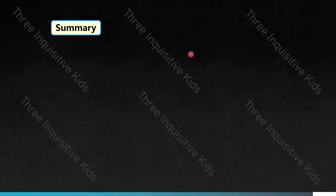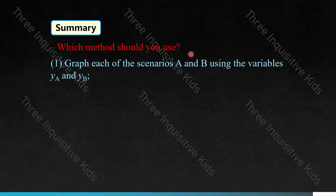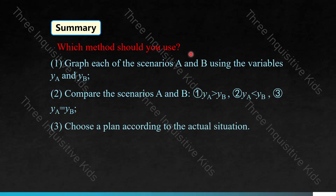Let's move on to the summary. The method is: graph each scenario A and B using variables YA and YB, then compare — whether YA is greater than YB, YA is less than YB, or they are equal to each other. Then choose a plan according to the actual word problem.